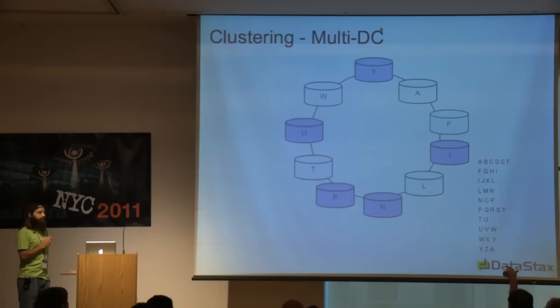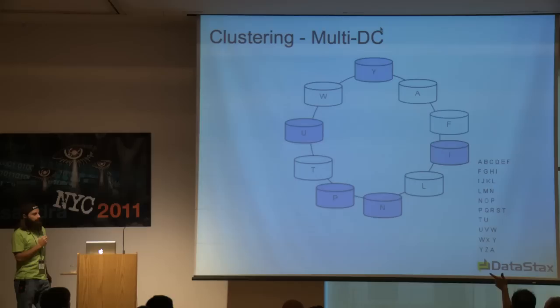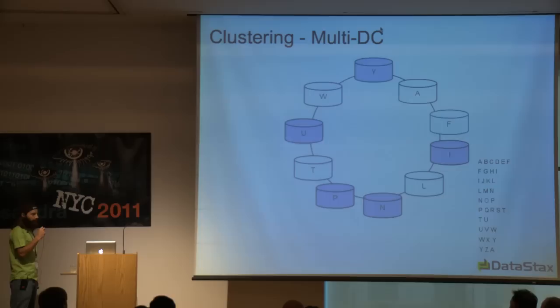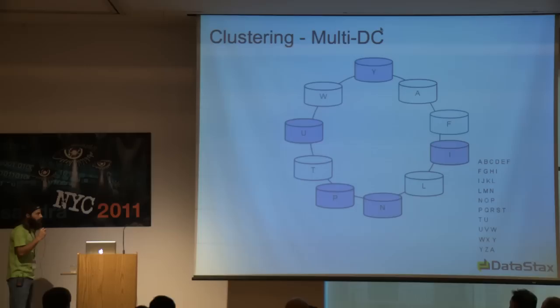Multiple data centers work the same way — the ring is scattered around the data centers. When a new node joins, it's effectively stealing part of the token space and communicates by gossip to say 'I now own this range.' There's no downtime — everything keeps running. There's a cleanup task you should run to get rid of old data on the node from which the space was acquired, but it's pretty straightforward.